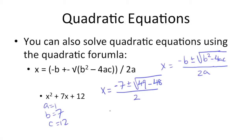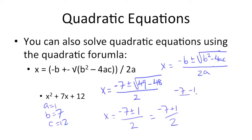Now all we need to do is simplify this out. We get negative 7 plus or minus the square root of 1, which is 1, over 2, which equals negative 7 plus 1 over 2, and negative 7 minus 1 over 2. The first one gets us negative 8 divided by 2, which is negative 4. The second one gets us negative 6 over 2, which gets us negative 3. And negative 4 and negative 3 would be the roots.